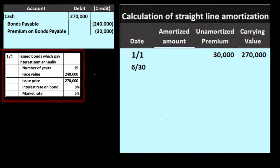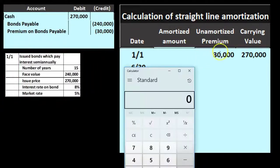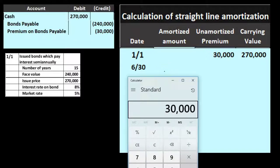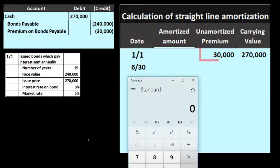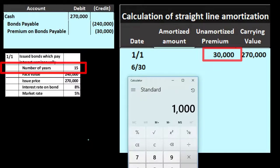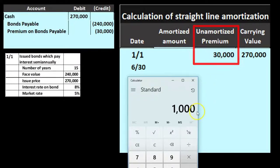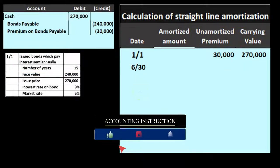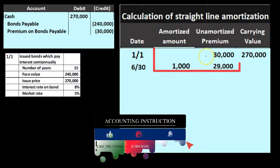We're calculating how much premium to allocate each period. We have $30,000 premium divided by 30 periods — because 15 years times 2 semi-annual payments equals 30 periods. Another way to see it: $30,000 divided by 15 years equals $2,000 per year, then divided by 2 equals $1,000 per period. So we'll reduce the premium by $1,000 each time period for all 30 periods, bringing it to zero at maturity.